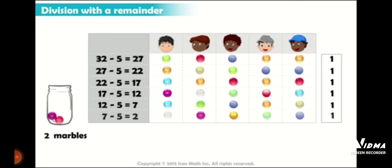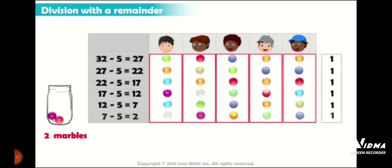At the end you can see we will be left with 2 marbles. We need 5 then only we can distribute them equally. So these 2 which are left in the jar are known as remainder. And how much will they get? They will get 6 marbles each.